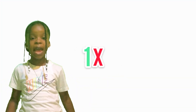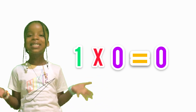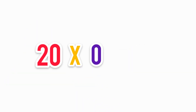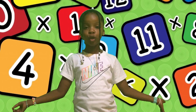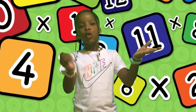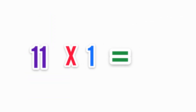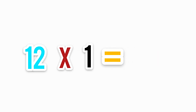Here are some facts we need to know when multiplying. When we multiply a number by zero, the product is always zero. For example, twenty times zero equals zero, and one hundred times zero equals zero. Also, when we multiply one by any number, we always get the same number. For example, eleven times one equals eleven, and twelve times one equals twelve.